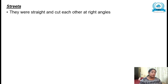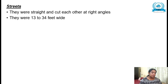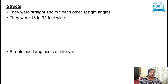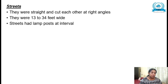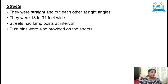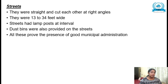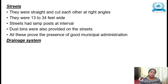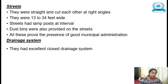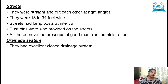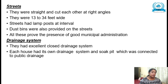As a subheading, write about streets. Streets were straight and cut each other at right angles; they were 30 to 34 feet wide. Streets had lamp posts at intervals, and dustbins were also provided on the streets. All these proved the presence of good municipal administration.